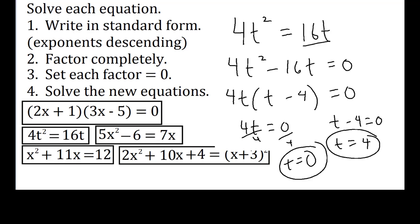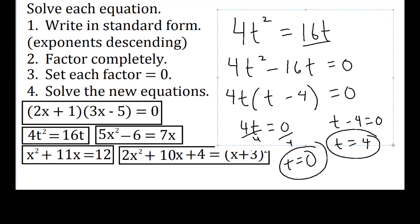So again, two answers: t = 0 and t = 4. Write it in standard form, factor it completely, set each factor equal to zero, and then solve the new equations — they're usually going to be one or two-step equations.